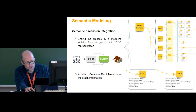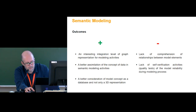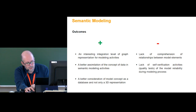We propose a second activity to flip the process: creating a Revit model from a given graph describing a semantic structure. The detailed graph is the input containing all needed parameters, and the Revit model is the output considered as a translation of the graph. As positive outcomes, we have an interesting integration level of graph representation for modeling activities, better assimilation of the concept of data in semantic modeling, and a better consideration of the model as a database and not only a 3D representation. As negative outcomes, we identified a lack of comprehension of relationships between model elements and a lack of self-verification and quality testing activities.